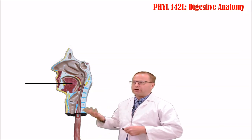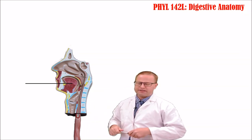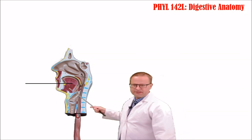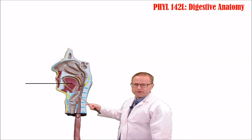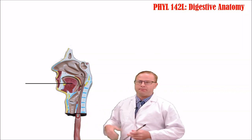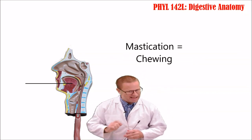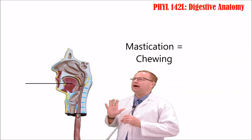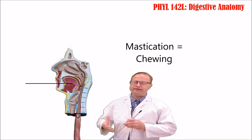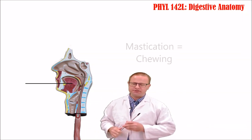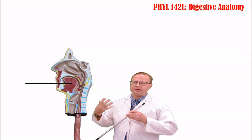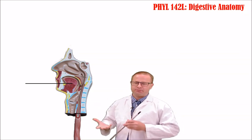Let's start where digestion begins — in the mouth. In the mouth we have the tongue, the teeth, and everything else, and the mouth is there for mastication. Mastication just means to chew. We're chewing food up and breaking it down into smaller parts, providing more surface area for enzymes to act upon.